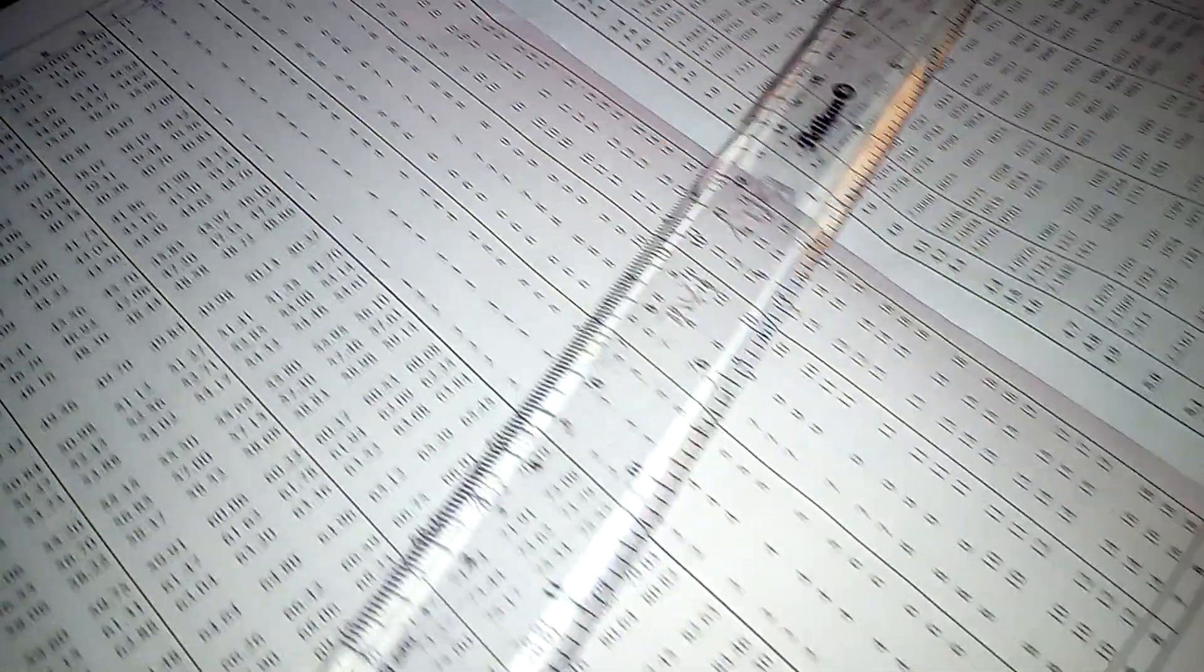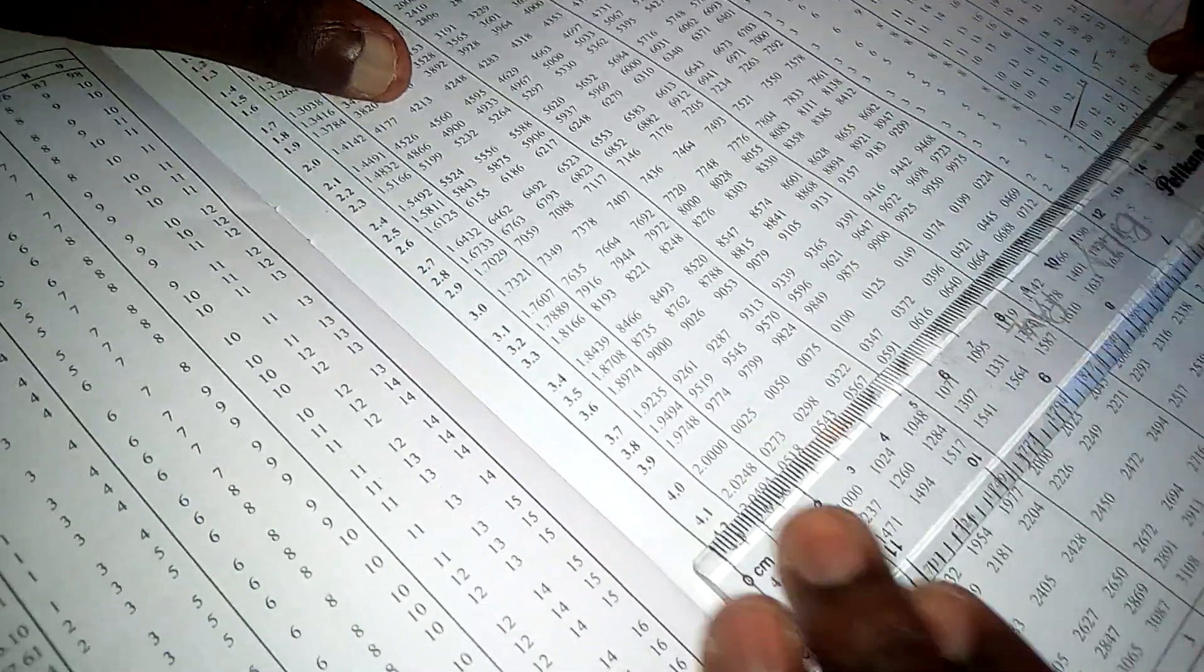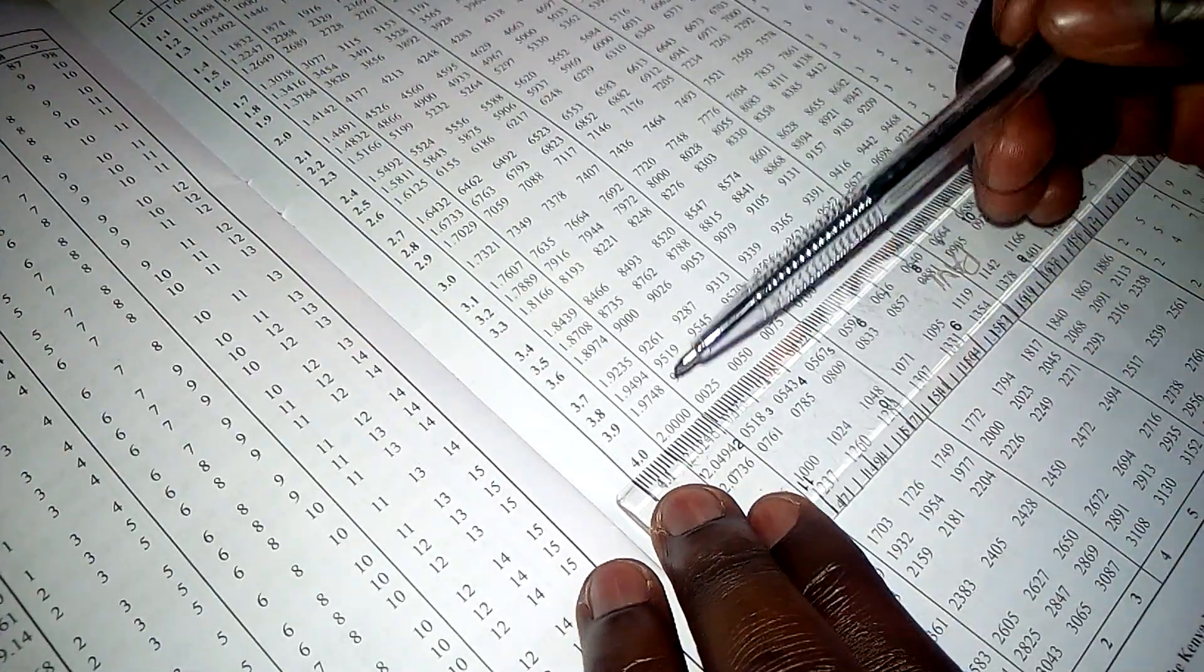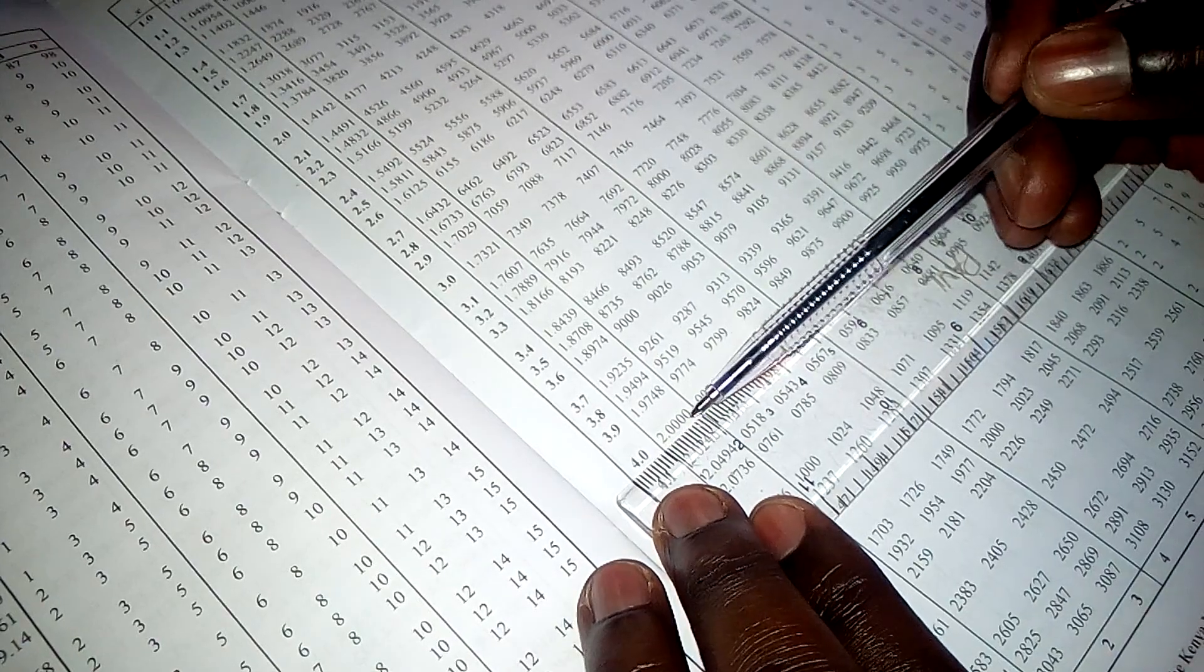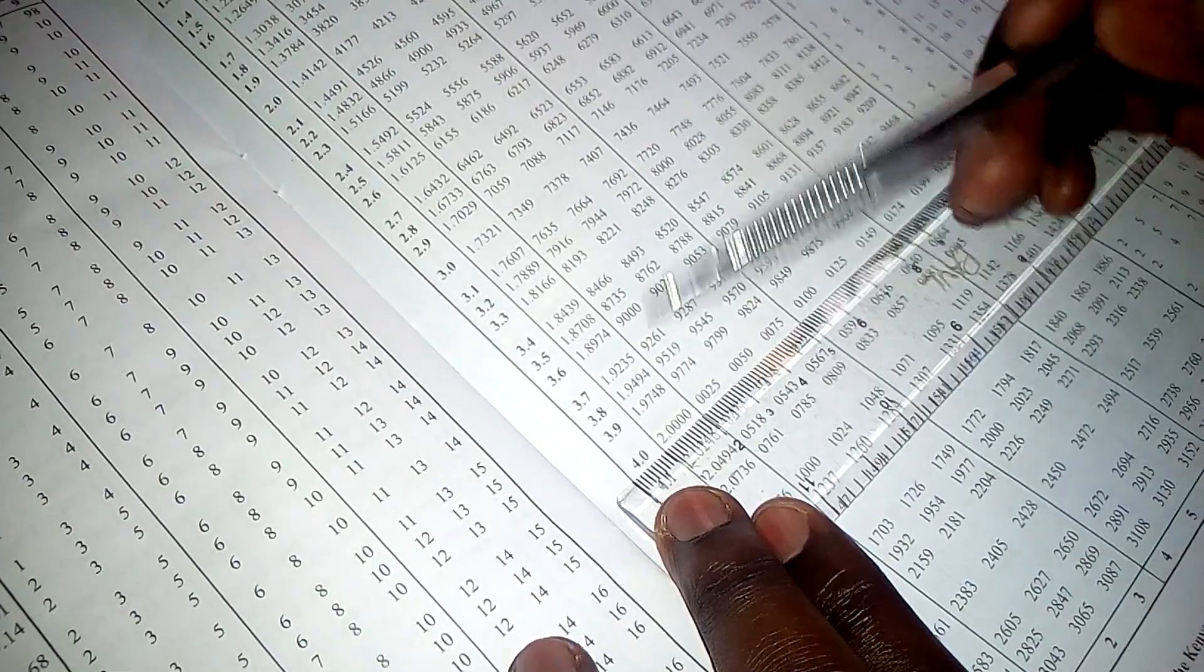So what is the square root of 4.0? That is a little bit easier to see. The square root of 4.0 is just 2.0000.